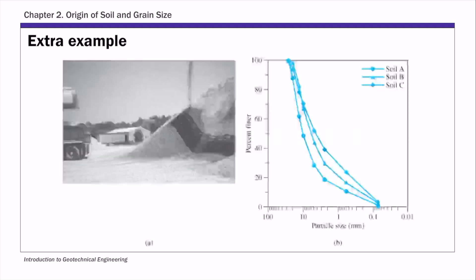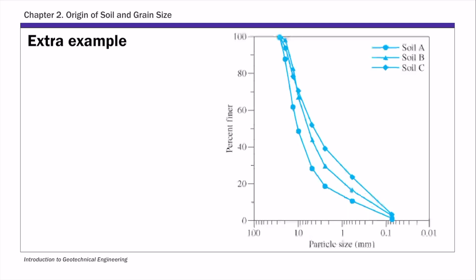This slide shows the site where these three soil samples were taken. On the right-hand side are three particle size distribution curves from the sieve analysis — soil A, B, and C. We're going to determine two coefficients for all three soils.